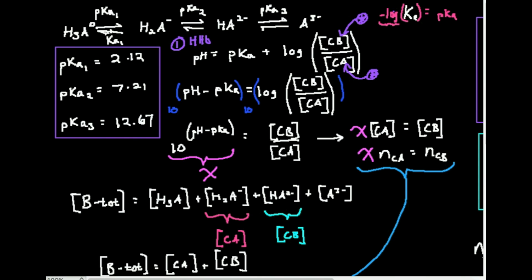The second deprotonation is governed by Ka2 — taking the negative log gives pKa2 — where H2A⁻ is deprotonated to HA2⁻. The third deprotonation is governed by Ka3, yielding A3⁻. When making a buffer, number one, I have to know the pH of the buffer. It has to be specified in the problem. The rule is that to get maximum buffering capacity, the desired pH should be within one unit below and one unit above the pKa.